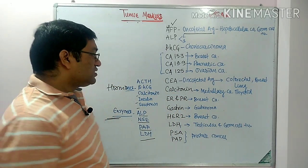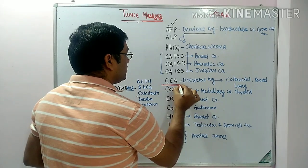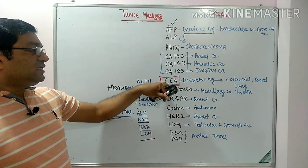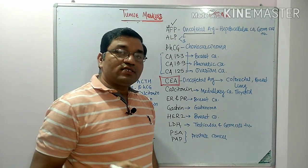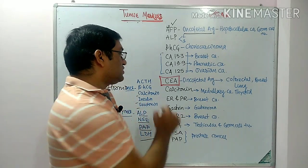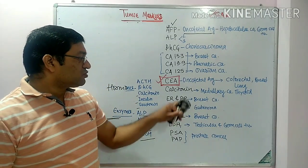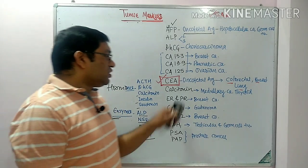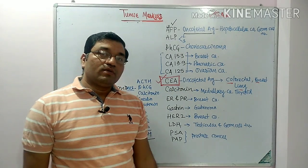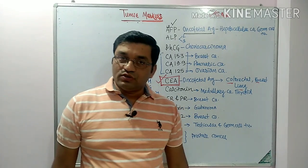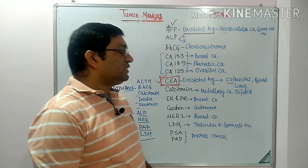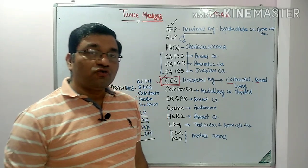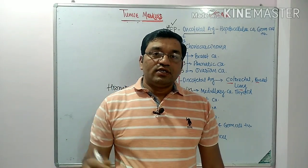The second oncofetal antigen is carcinoembryonic antigen (CEA). Carcinoembryonic antigen is useful in the diagnosis of colon cancer and breast cancer. Its concentration is increased in these cancers and it is used for screening, staging, monitoring, and follow-up. So these two — alpha-fetoprotein and carcinoembryonic antigen — are the oncofetal antigens used for the detection of cancer.